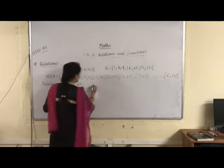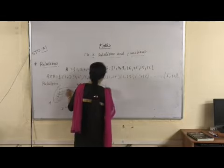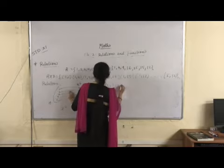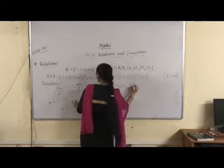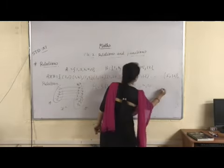Now see, so here in a relation set, how many elements, how many ordered pairs will be there? (1,1), (2,4), (3,9), (4,16), and the last is (5,25).